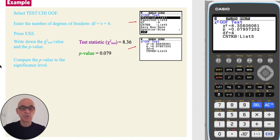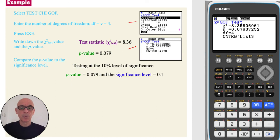As the critical value was not given in the question, we will compare the p-value to the significance level, which was 10%, 0.1.